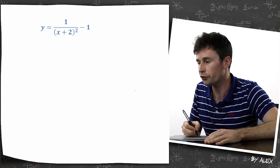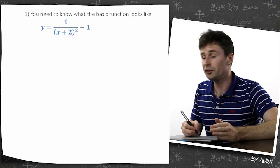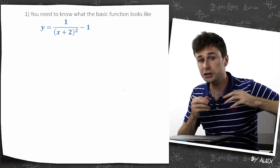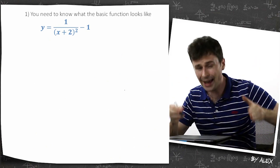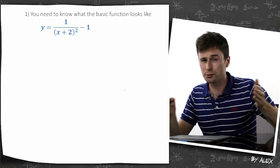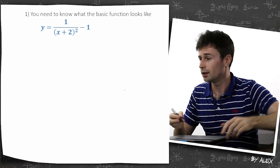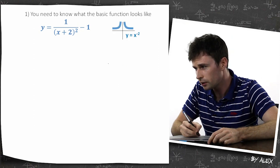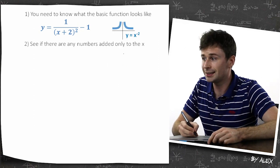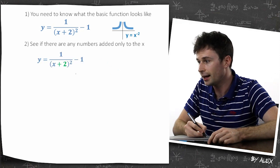So drawing any basic function. So first of all, you need to know what the basic function looks like, which is why I showed you all those graphs to begin with, all those different types of graphs. Because if you get what that looks like, moving them around is just simple. So we've got this one, and it's to the power of negative 2, so we know it's going to be a truncus.